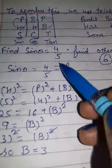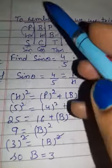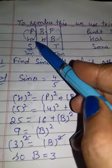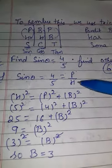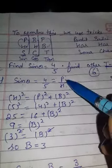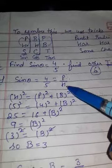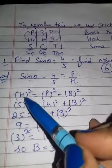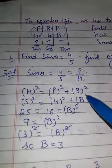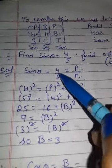Sine is given to you as 4 by 5. You have to find the others. You know what sine theta is — that is P upon H. It means you have been given two sides. You can find the third side by using Pythagoras theorem.